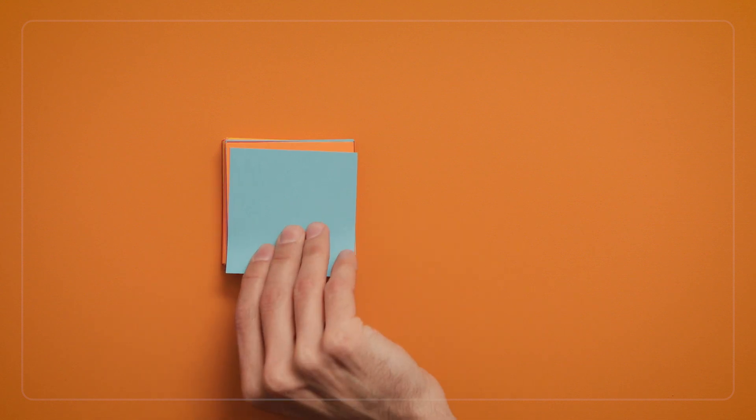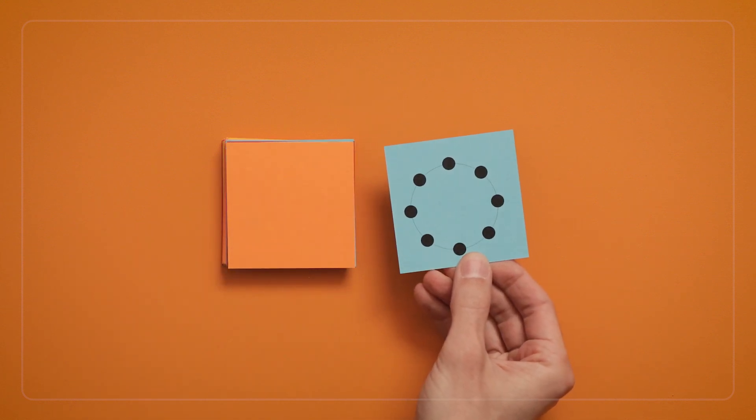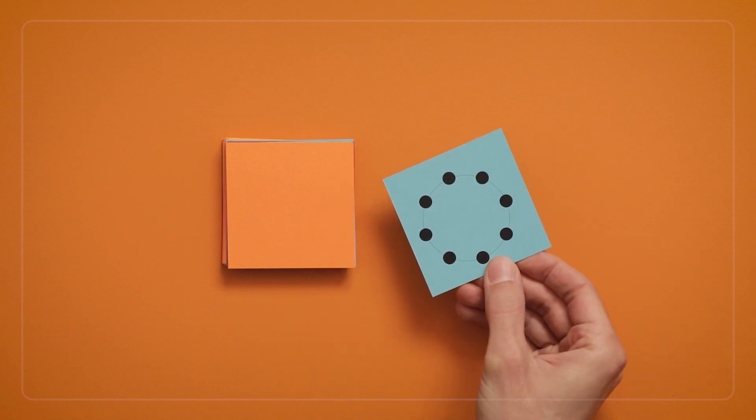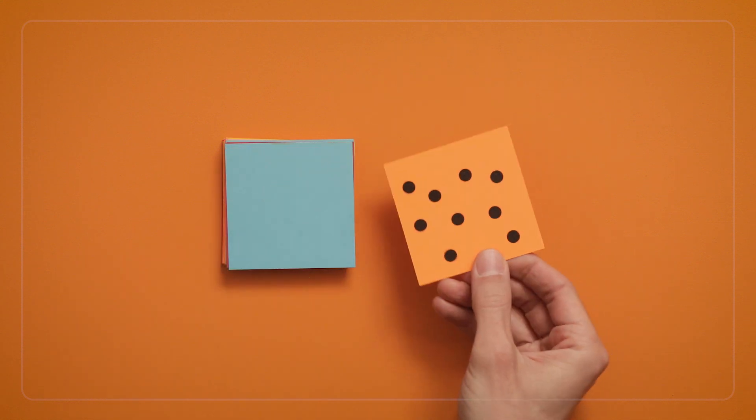You can also add in cards with dots arranged in circular and scattered configurations. These are more challenging to subitize because they're harder to group quickly. So how many dots do you see?